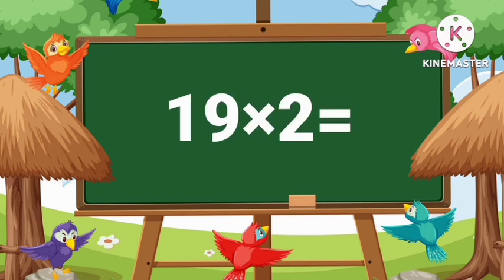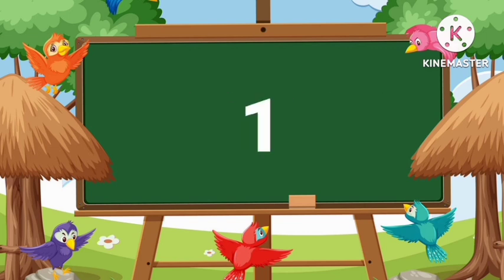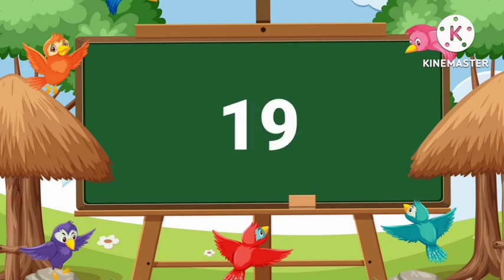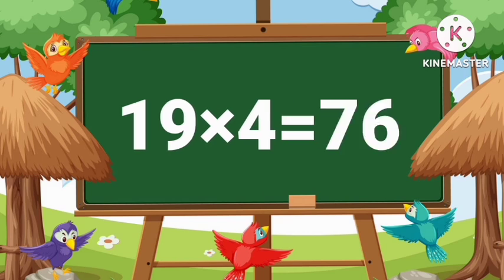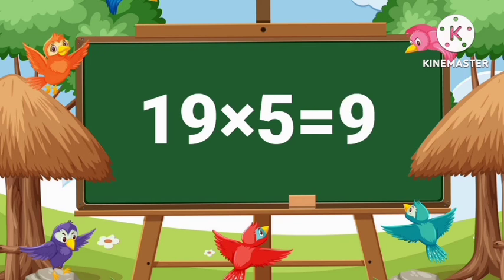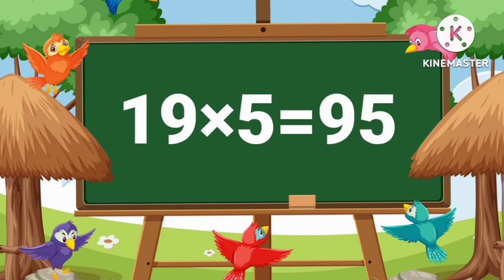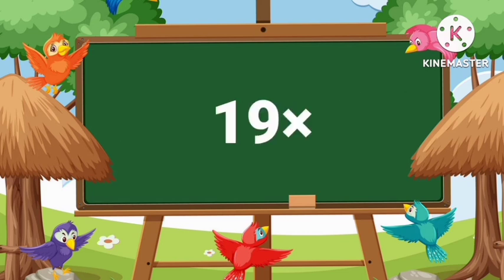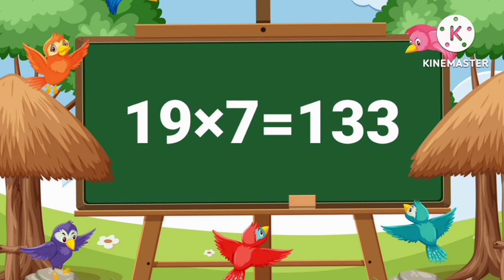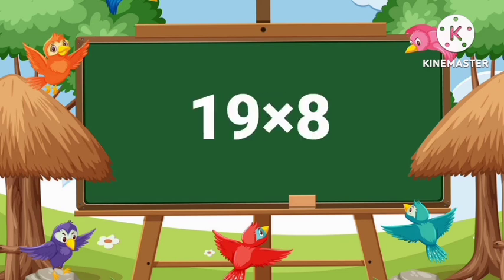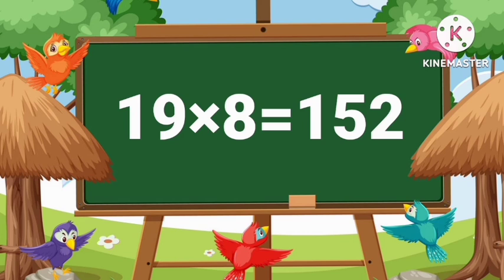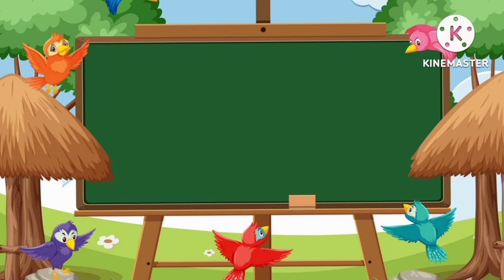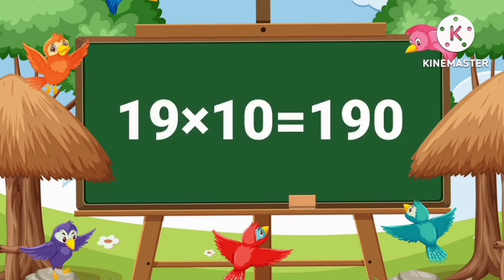Nineteen ones are nineteen. Nineteen twos are thirty-eight. Nineteen threes are fifty-seven. Nineteen fours are seventy-six. Nineteen fives are ninety-five. Nineteen sixes are one hundred fourteen. Nineteen sevens are one hundred thirty-three. Nineteen eights are one hundred fifty-two. Nineteen nines are one hundred seventy-one. Nineteen tens are one hundred ninety.